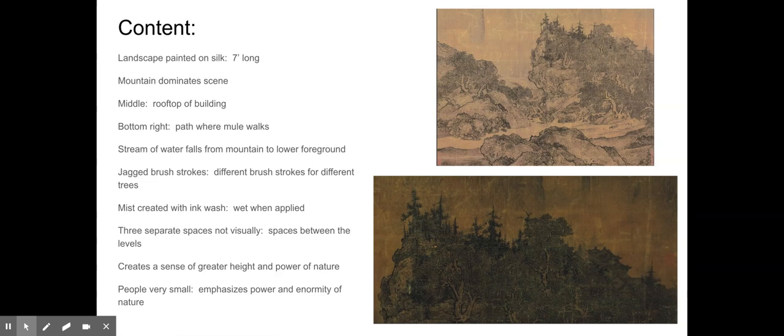What Fan Kuan is known for is using jagged brush strokes — you can see that in the trees — and he changes up his brush strokes for different trees, showcasing the differences in natural phenomenon. When he wants to create mist or shading, he does an ink wash, taking the ink and applying water to it, almost like a watercolor but with ink. That creates a sense of mist. He uses dots to create texture and is highly skilled at modeling rocks and natural phenomenon by varying his brush strokes and the way he applies the ink.